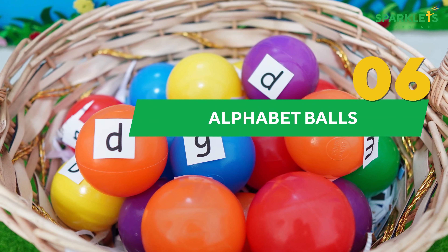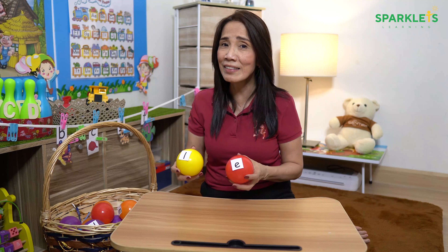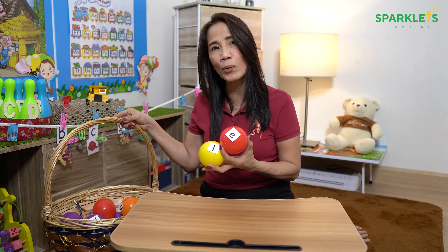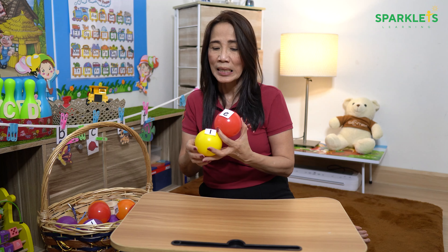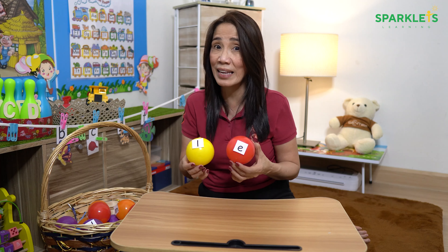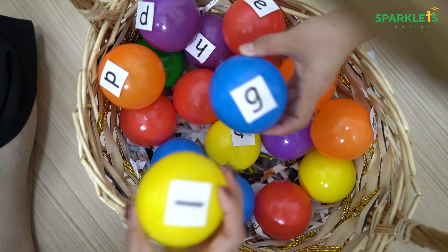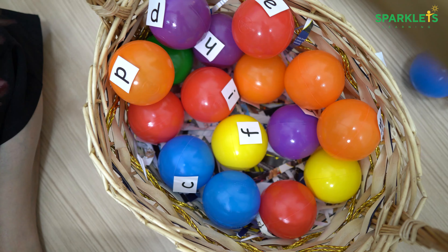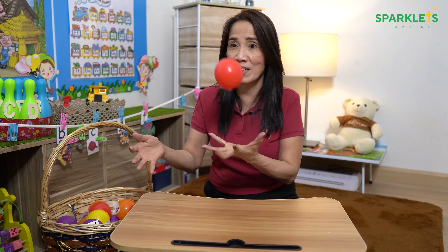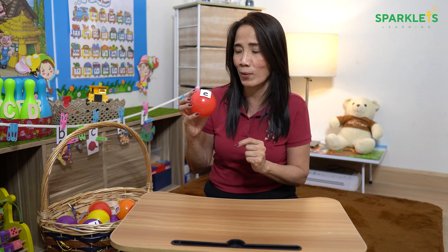Number 6: Alphabet Balls. In this activity, you will need some balls and a basket or any container where you can put the balls. All you have to do is label the balls with the lowercase letters of the alphabet. Put them in one container and let the children get a ball and say the sound of the letter on it. You can also play catch — as they catch the ball, they have to say the letter sound.